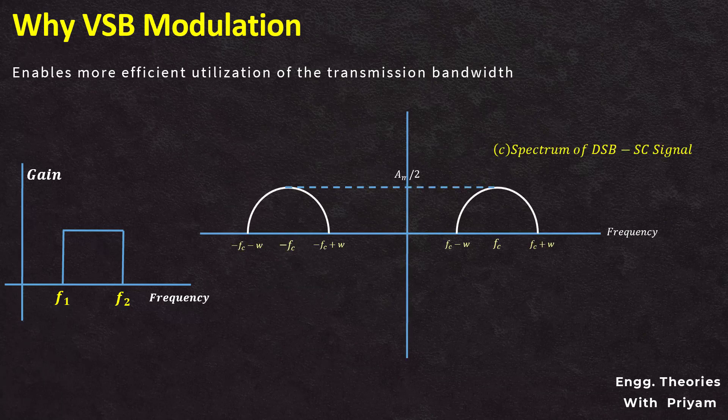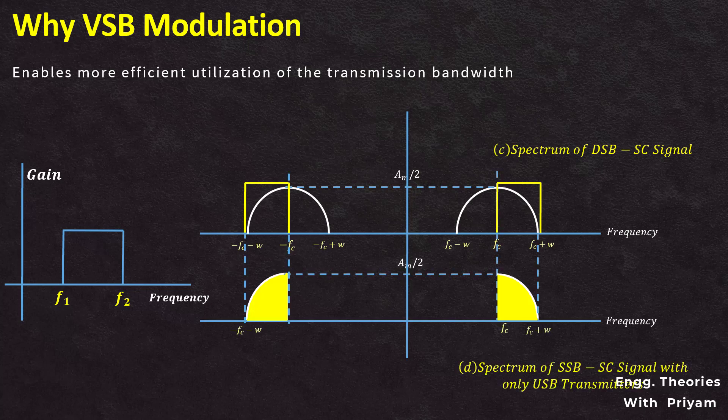In SSB modulation, an ideal filter was required to eliminate the carrier and the unwanted sideband. However, it is impossible to design an ideal filter with infinite bandwidth and zero attenuation. This is because no guard band is available between the upper and lower sidebands of the modulated signal. As a result, some of the unwanted sideband will always be present in the SSB-SC modulated signal.